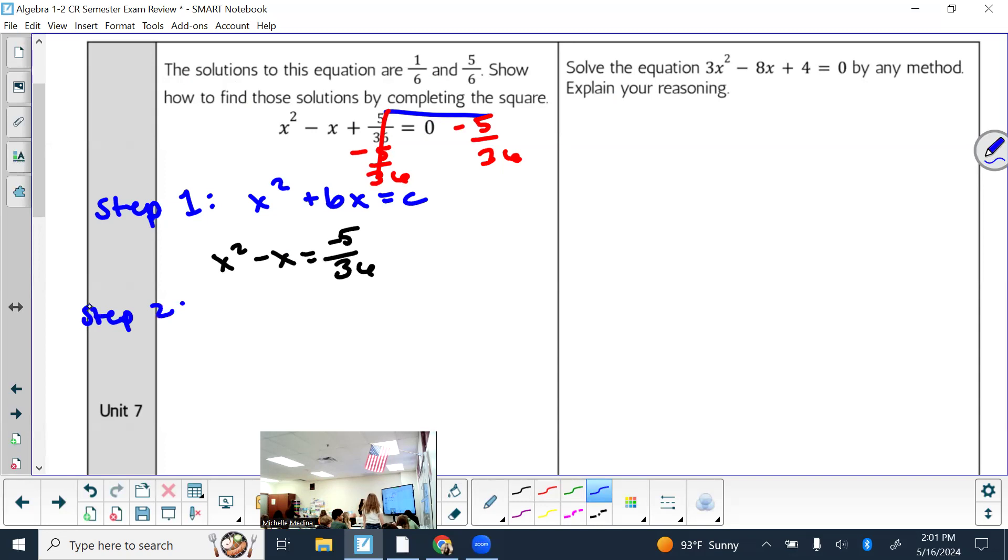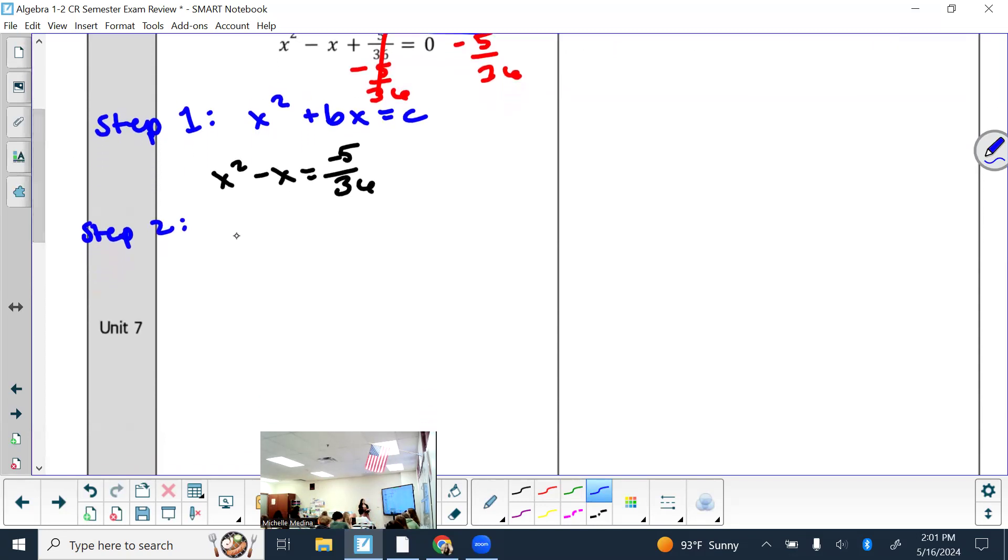So that'll cancel here. Whatever you do to one side, you have to do to the other. So I get x squared minus x equal to negative 5/36. That's step one. If you could even do just step one, I would give you some points. What is step two? Do we remember what we do next? Take half of b, then square it, then add to both sides. If you're wondering why that's a really random step, we taught you why in lesson 12. Now you just need to memorize it.